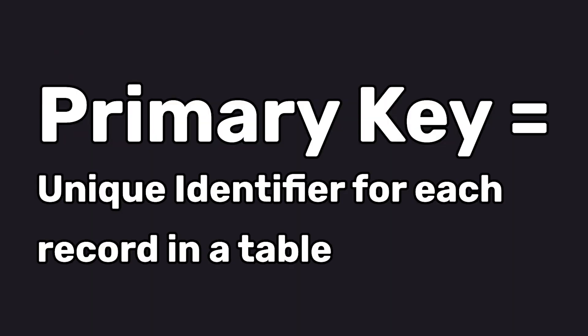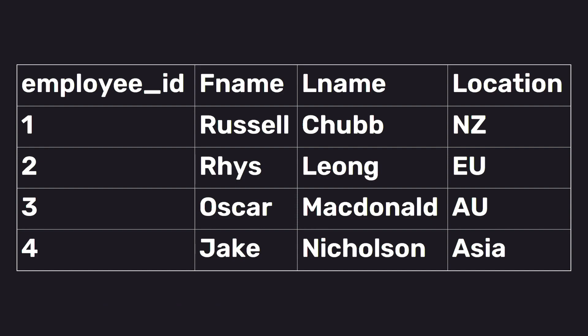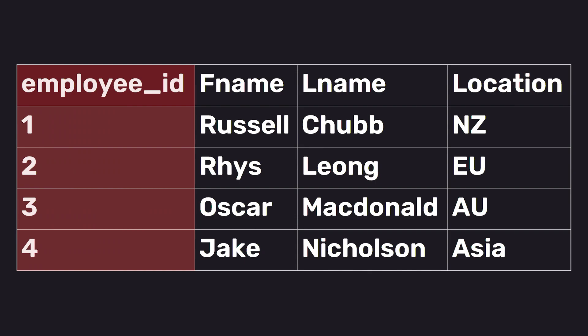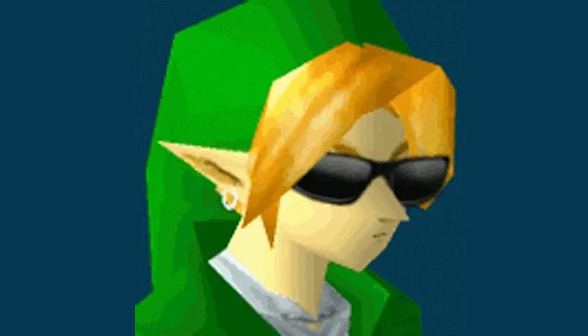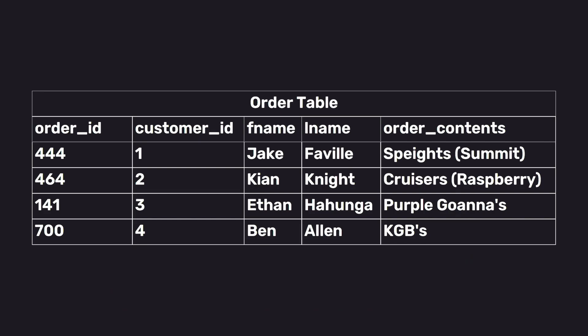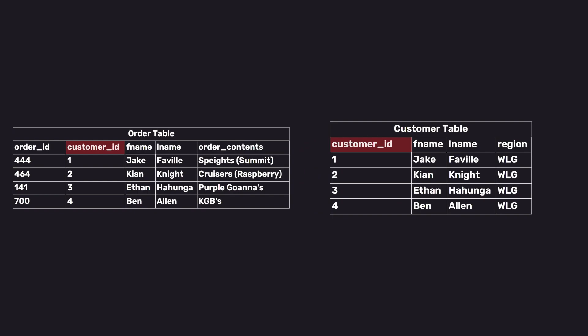A primary key is a unique identifier for each record in a table. For example, in an employees table, the employee_ID could be the primary key, ensuring each employee is uniquely identifiable. A foreign key is a field in one table that uniquely identifies a row of another table, creating a link between the two tables. For example, an orders table might have a customer_ID that serves as a foreign key linking to the customer table's primary key.